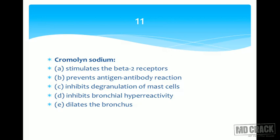Chromolin sodium doesn't prevent binding of antibody to antigen, and doesn't prevent the reaction. The reaction happens, but when it happens the mast cell is going to degranulate and release chemical mediators of asthma — histamine, leukotrienes, bradykinin, etc. Chromolin inhibits this degranulation, stabilizes the mast cell membrane, and prevents the further cascade of events.